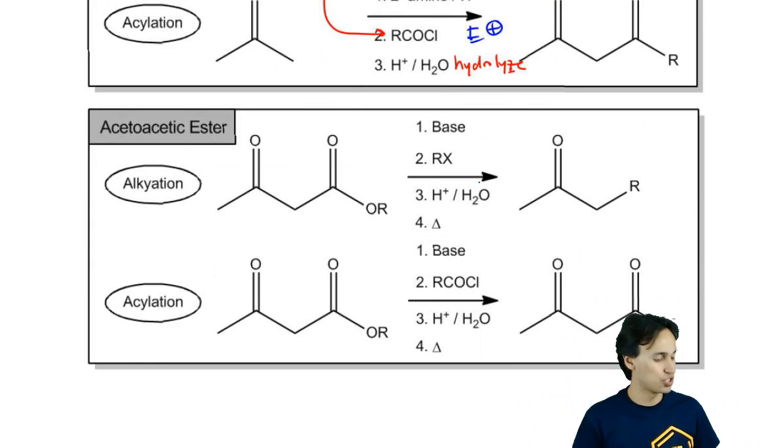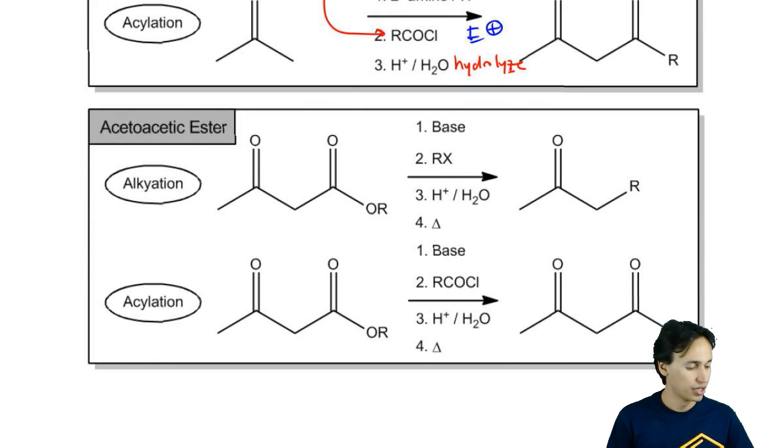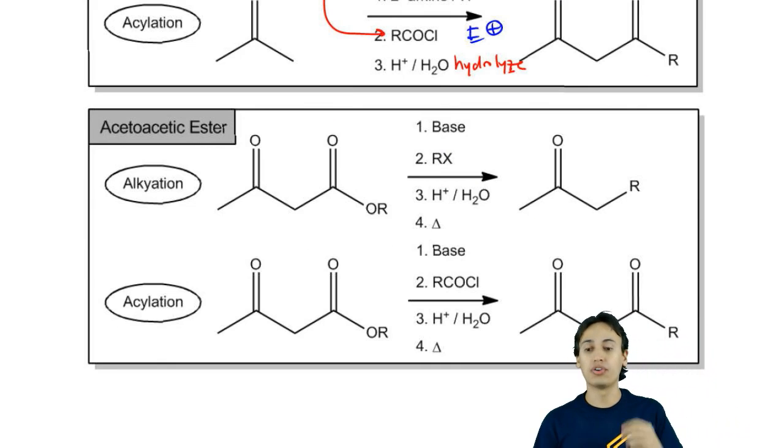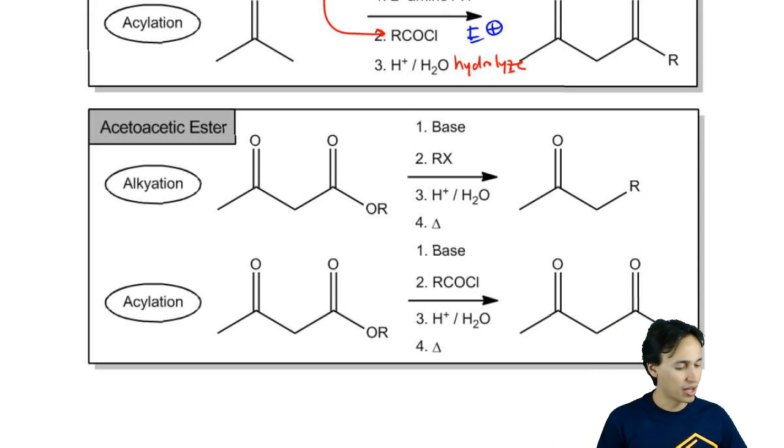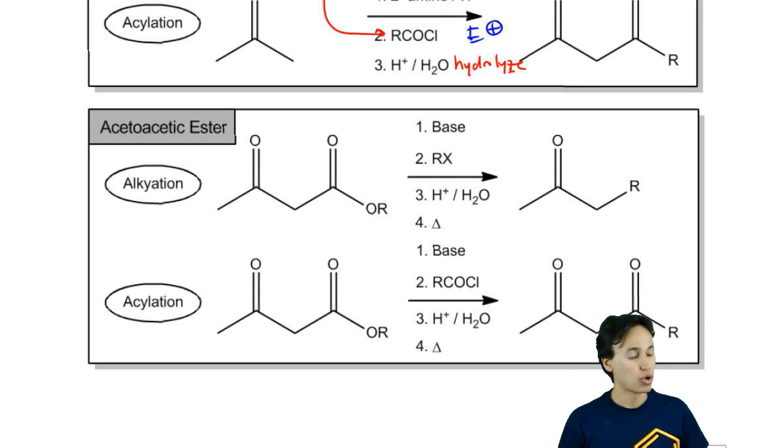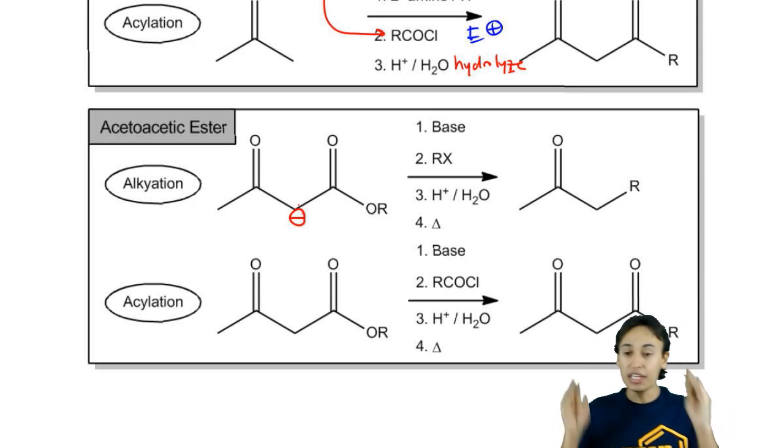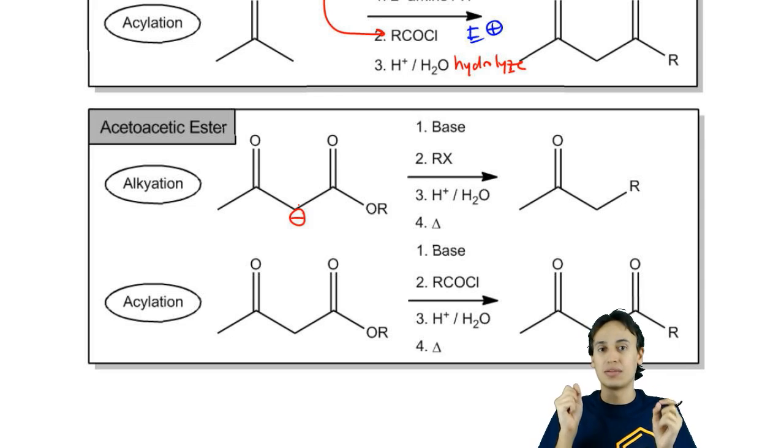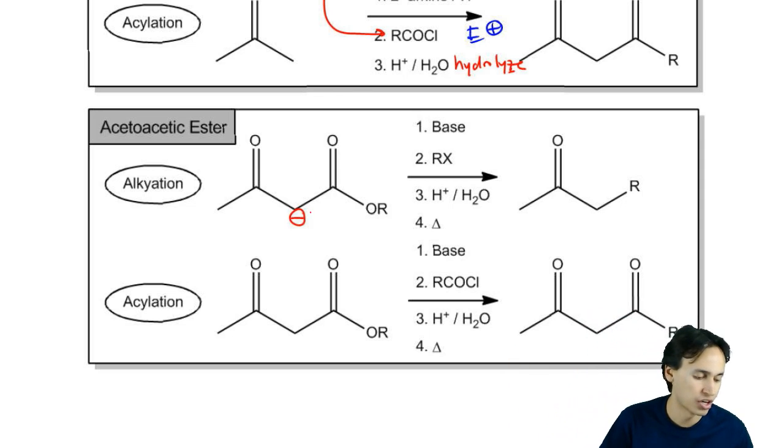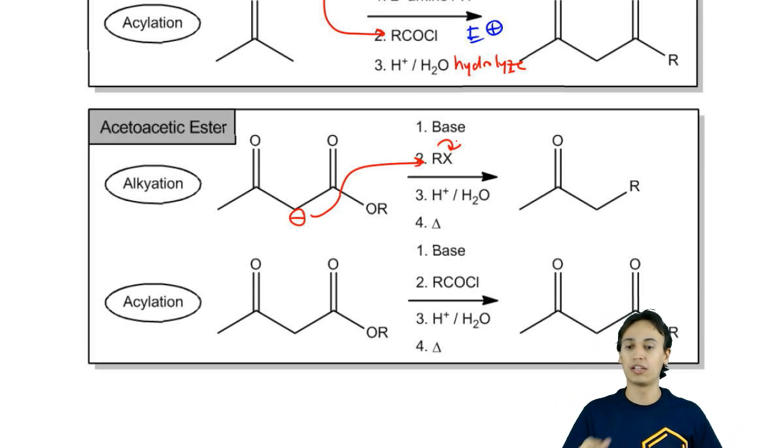Finally, we get to the last one, which is acetoacetic ester and dicarbonyl ester alkylations. With dicarbonyl ester alkylations, what we do is we end up forming an enolate between the carbonyls because we know that that is the most stable place for an enolate to form because it has the most resonance structures, that's the most acidic proton. That negative charge ends up doing an SN2 attack and adding an R group in that location.